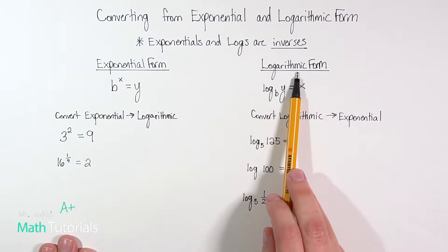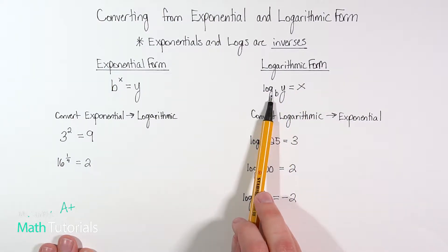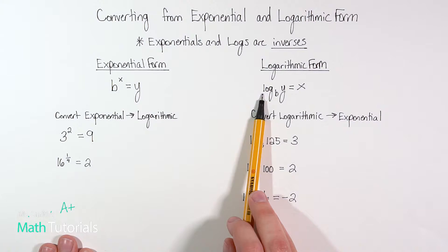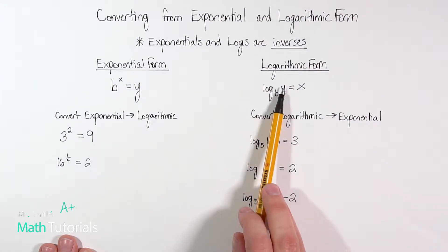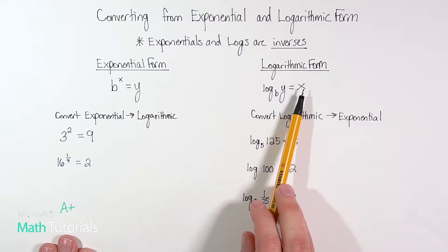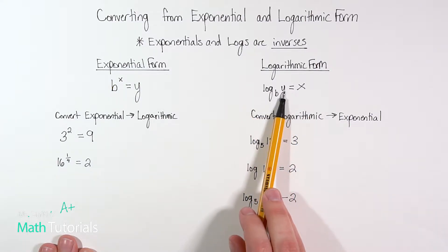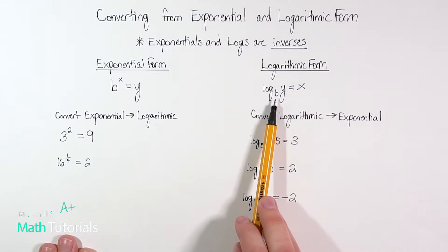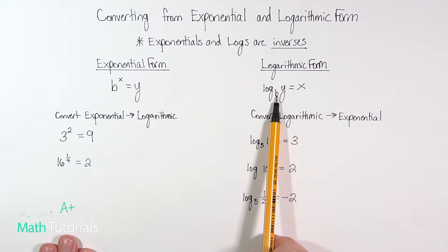Versus in log form, we've got this word log actually written. So we'll have this word log base b of y equals x. That's how we pronounce that: log base b of y equals x. Now of course it won't be a b and a y and an x necessarily, it could be, but typically we're going to have other values in for the b and for the y and for the x.